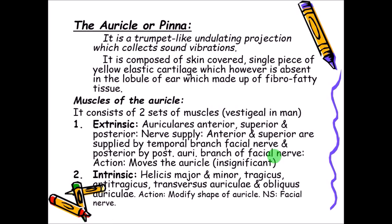The action of these extrinsic muscles moves the auricle in lower animals, but in humans it is insignificant. The intrinsic muscles are helicis major and minor, tragicus, antitragicus, transversus auriculae, and obliquus auriculae. They modify the shape of the auricle, but this is also insignificant in humans. The nerve supply of the intrinsic muscles is by the facial nerve.